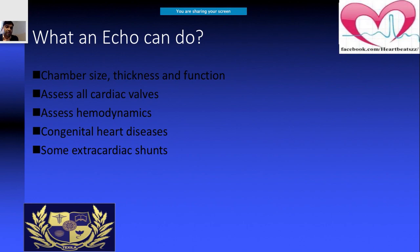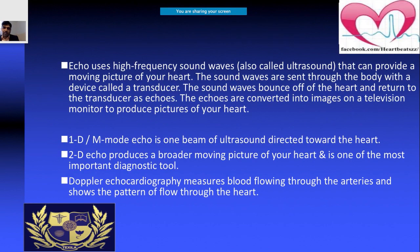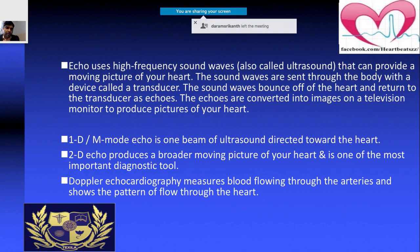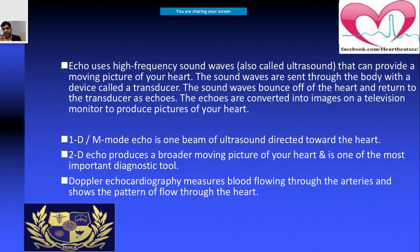Echocardiography is used not only to see the cardiac valves and hemodynamics, but also structural abnormalities — thickness, function, congenital heart disease, and extra-cardiac shunts. It uses ultrasound to visualize moving pictures of the heart. Sound waves are sent and reflected back from cardiac tissue. There are two modes: 1D (M-mode), which uses a single beam directed at the heart, and 2D mode, which gives a broader picture of the moving heart.